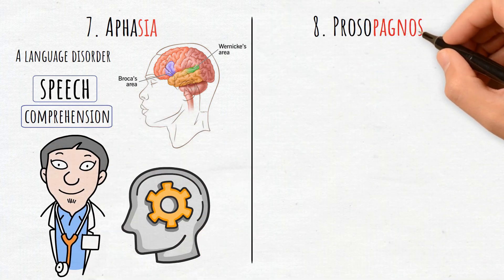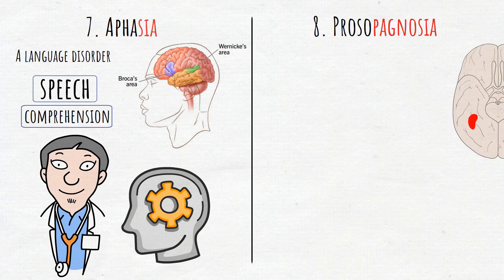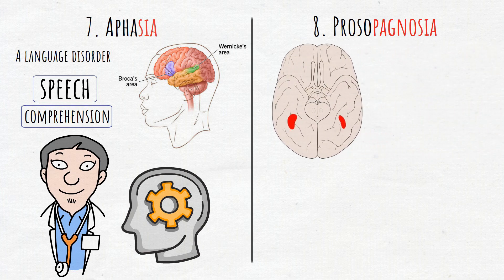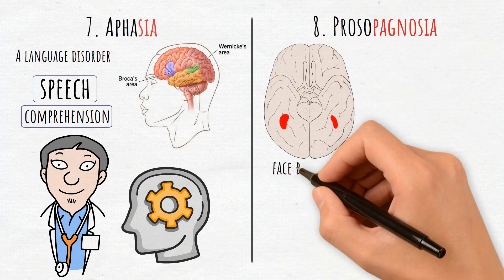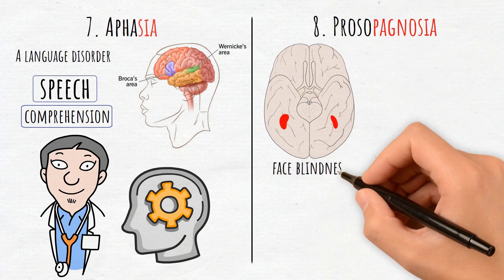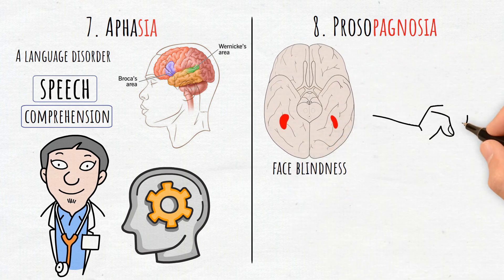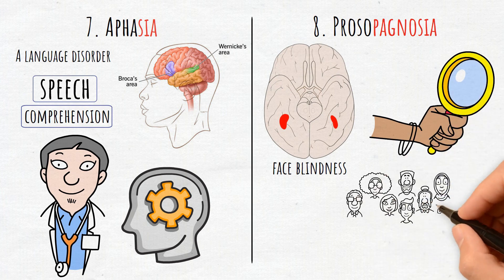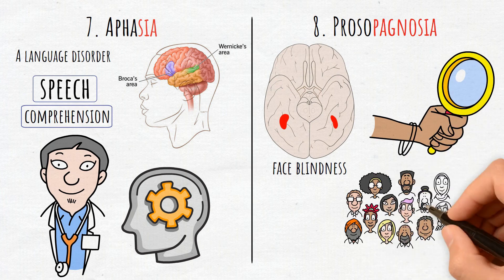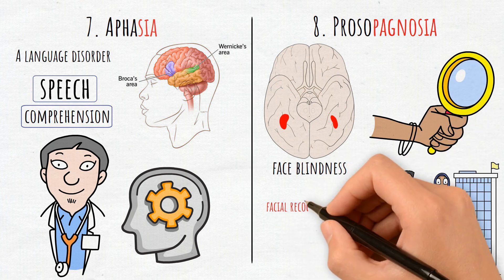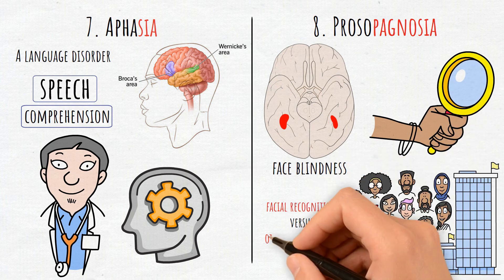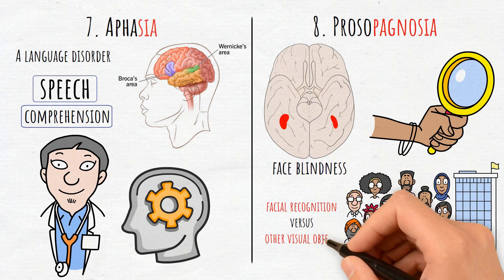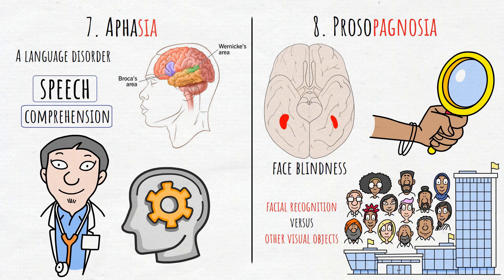8. Prosopagnosia. Known as face blindness, this is caused by damage to the fusiform gyrus. Studying this condition helps understand how the brain processes facial recognition versus other visual objects.